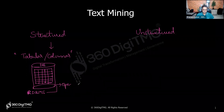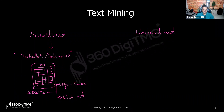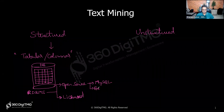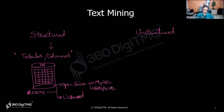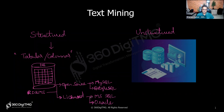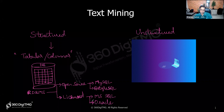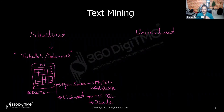Databases can be open source or licensed. The most famous open source databases are MySQL and PostgreSQL. On the licensed side, you have Microsoft and Oracle databases. There are also cloud-based databases: AWS-based, Azure (Microsoft), and GCP — Google Cloud Platform — related databases.